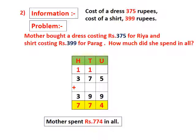Now we add the hundreds. In the hundreds place, 3 hundreds plus 3 hundreds plus 1 hundred carried over is equal to 700. The addition of this number is 774. So the mother spent Rs. 774 in all.